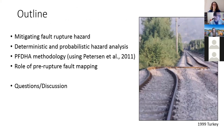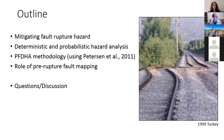The outline of the talk: we're going to talk about mitigating fault rupture hazard. I'm going to go through definitions and examples of two different fundamental approaches to hazard assessment — one deterministic and one probabilistic. Then we're going to explore in more detail the probabilistic fault displacement hazard analysis methodology using the Peterson et al. paper as the example. We don't have time to go through the whole PFDHA methodology, so we're going to zoom in and focus on the role of pre-rupture fault mapping, which is obviously the motivation for this class.